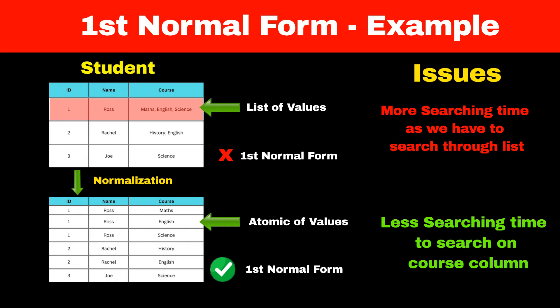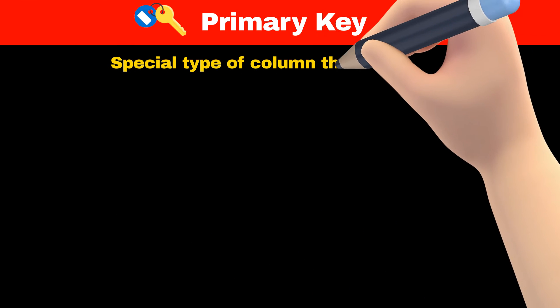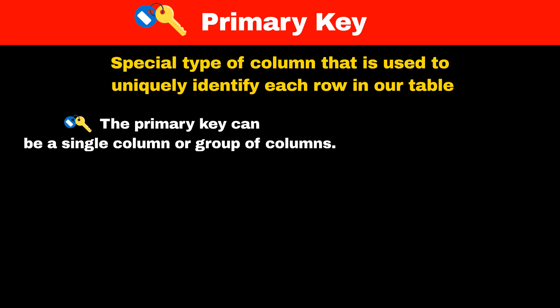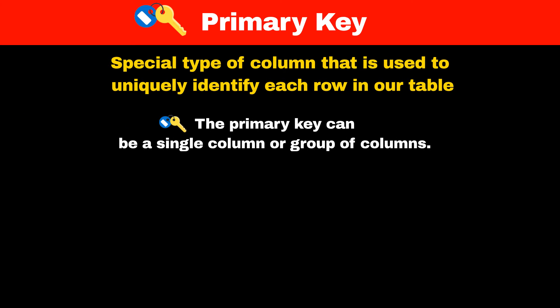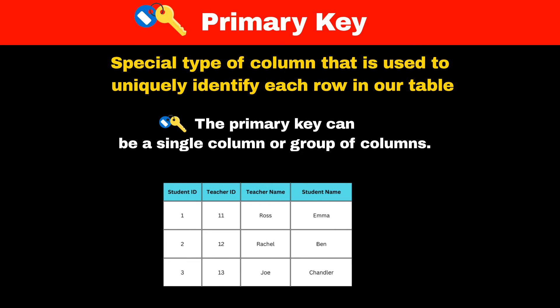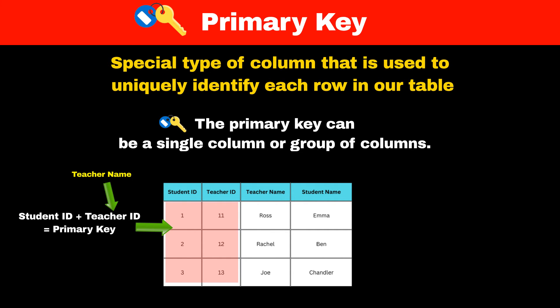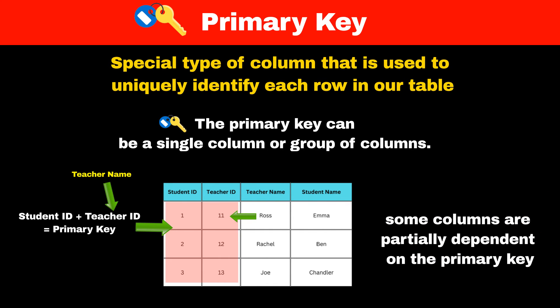Before understanding second normal form in SQL, let's understand primary key. A primary key is a special type of column used to uniquely identify each row in a table. A primary key can be a single column or a group of columns. Consider a student-teacher table with columns: student ID, teacher ID, teacher name, and student name. Student ID and teacher ID are part of the primary key — meaning their combination is used to uniquely identify rows. However, teacher name is not fully dependent on the primary key, since we can identify the teacher's name using teacher ID alone. This is called partial dependency.